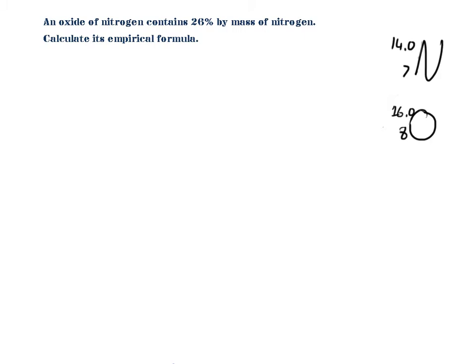In this question I've only been given one of the masses - 26% by mass of nitrogen. But by looking at the introduction of the question, it says 'an oxide of nitrogen', which implies that the two elements present in this molecule are nitrogen and oxygen. Therefore their formula is probably going to be something like NₓOₓ - so this is the basic formula of an oxide of nitrogen.